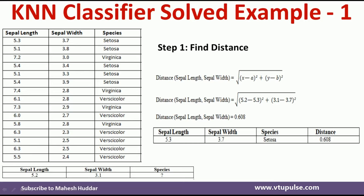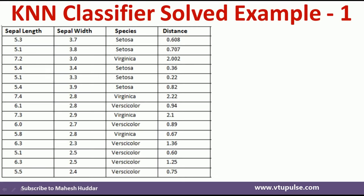Similarly, we need to calculate the distance from the new example to the second example: √((5.2 − 5.1)² + (3.1 − 3.8)²). Once you solve that, you get the distance from the new example to the second example. We need to calculate the distance from the new example to all 15 examples, and once you calculate all the distances, you will get a distance table like this.